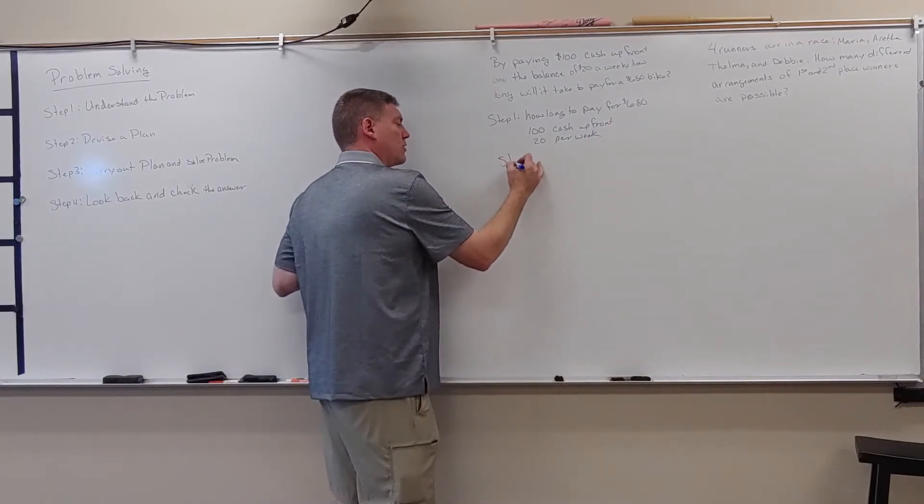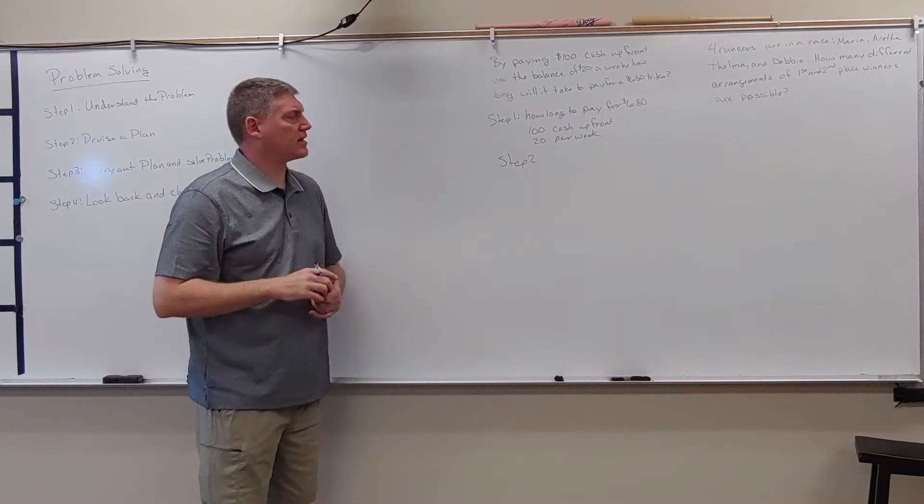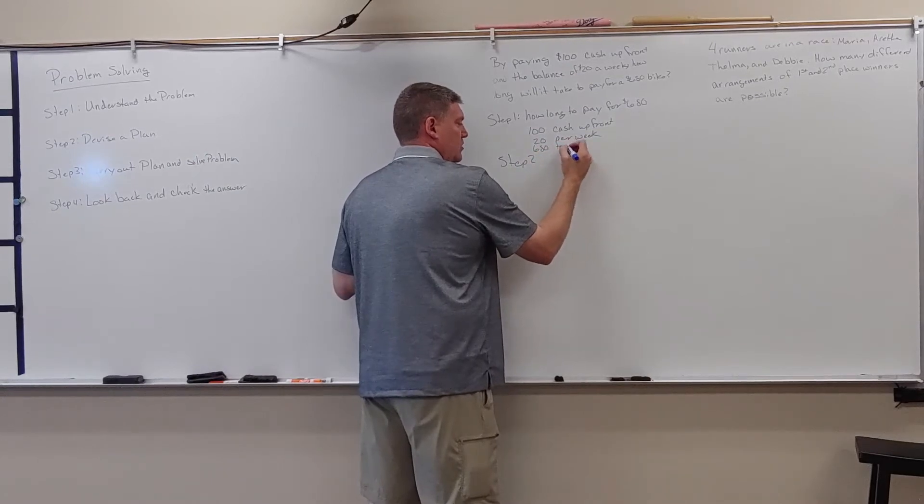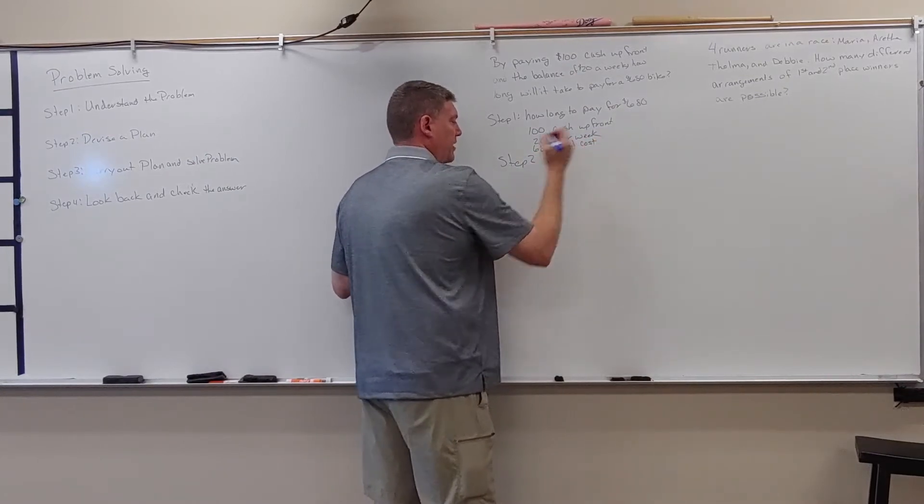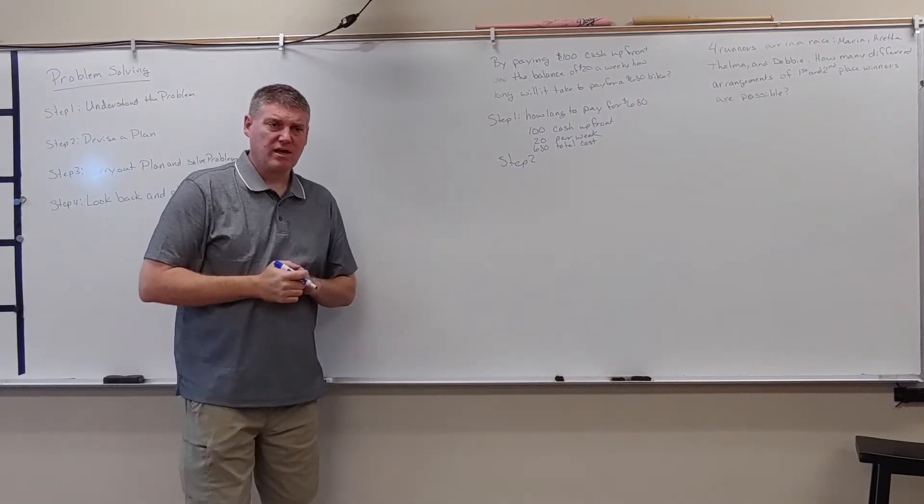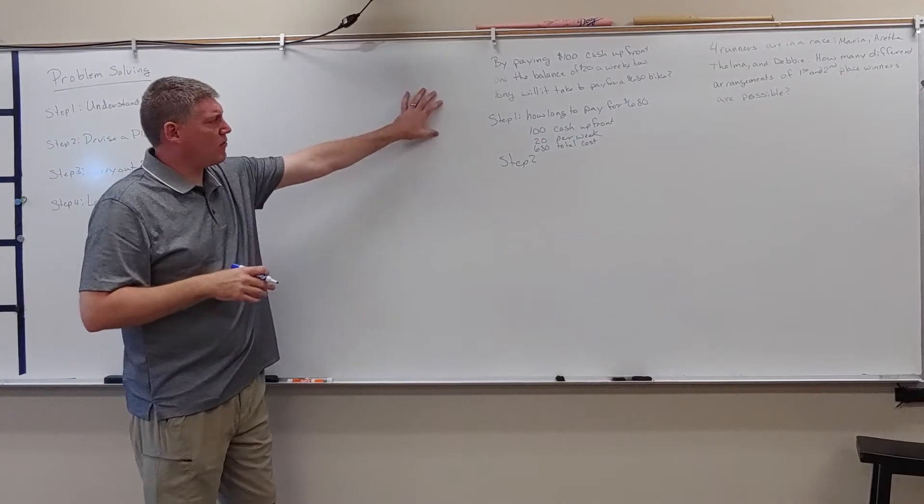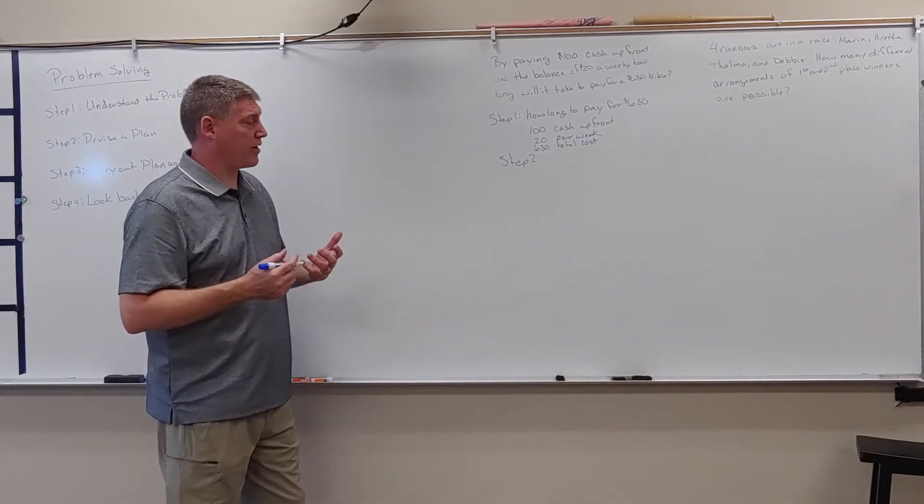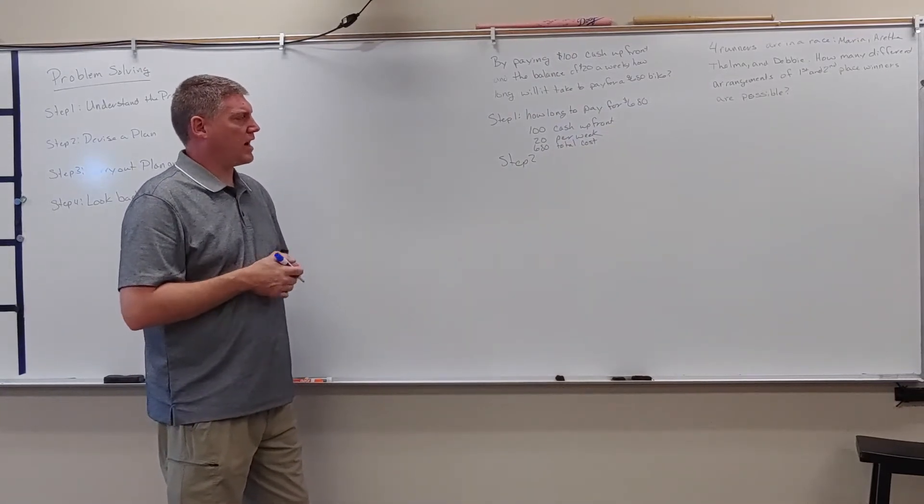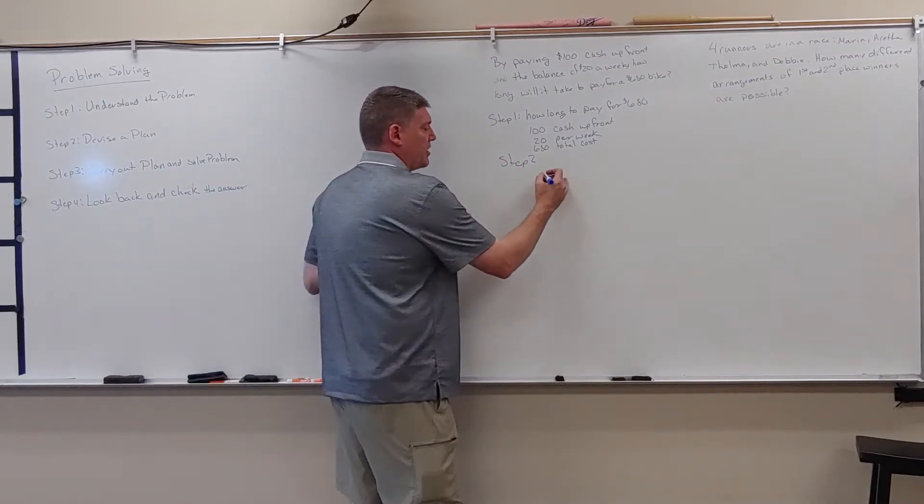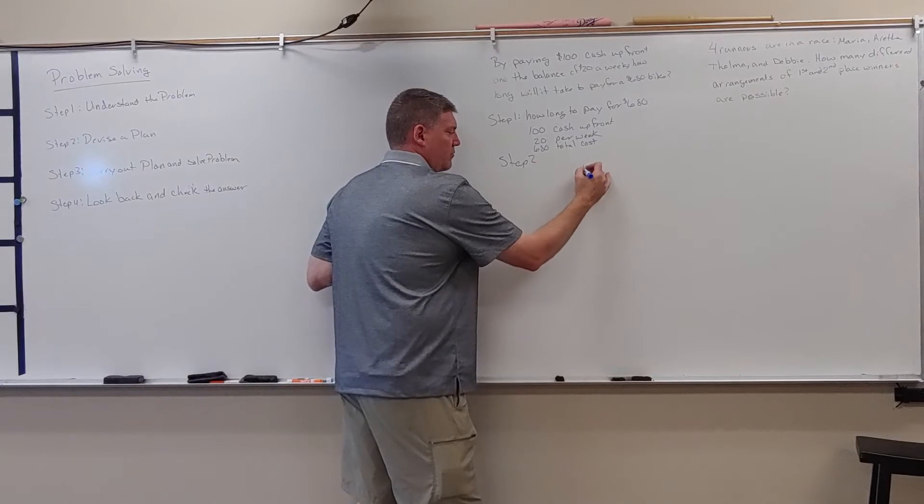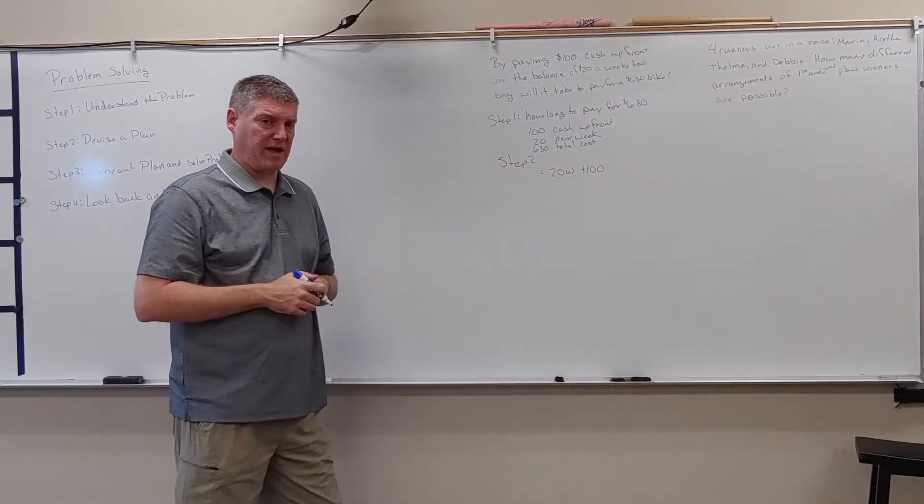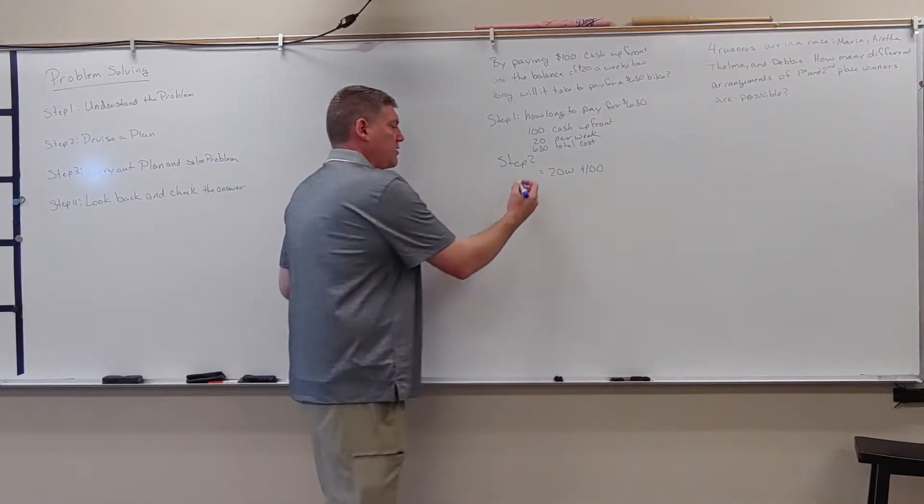Now, we're going to look at step two. Step two is trying to look at how long is he going to take? And I probably should have put up here, I should have put in here $680 total cost. So step two, we're going to devise a plan. So our plan is going to be looking at, well, I know that if I keep adding $20 per week, I should get at some point to $680 or even greater. So I'm going to set up my model for this. So I'm going to say, if I started with $100 and I added $20 per week, so I'm going to use W here for my price per week. That would give me total.